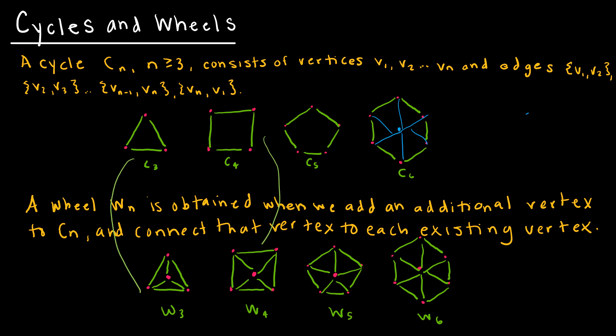An application of a wheel might be something to do with networking, because it's better to have processors directly connected to each of the computer stations, as opposed to having to travel two distances to reach a node on the other side.